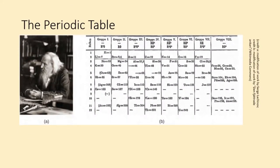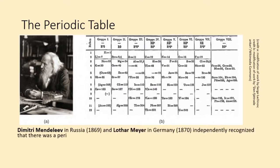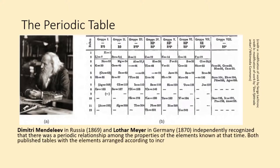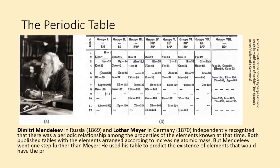The periodic table. Dmitry Mendeleev in Russia and Lothar Meyer in Germany independently recognized that there was a periodic relationship among the properties of the elements known at that time. Both published tables with the elements arranged according to increasing atomic mass. But Mendeleev went one step further than Meyer. He used his table to predict the existence of elements that would have properties like aluminum and silicon but were yet unknown.